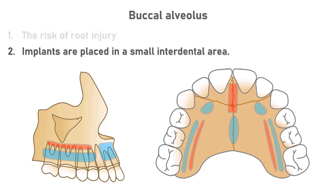If more than 3 mm of movement is needed, placement of another implant may be useful after the teeth have moved 3 mm mesiodistally. Both the distance between the roots and the buccal-lingual space are correlated with the risk of root injury and the amount of possible tooth movement. The buccal-lingual space is particularly important in securing available space.